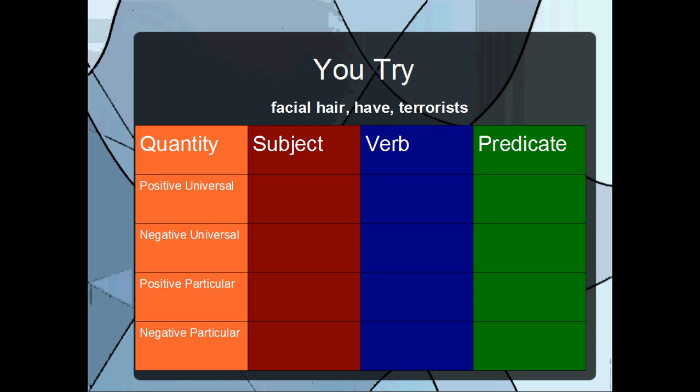Now, there's some terms below, or some words below you try, and they're not in any particular order. You have to decide whether they go in the subject, verb, and predicate. And then, for each positive universal, negative universal, positive particular, negative particular, you have to make the propositions accordingly. I'll give you a moment to do that.